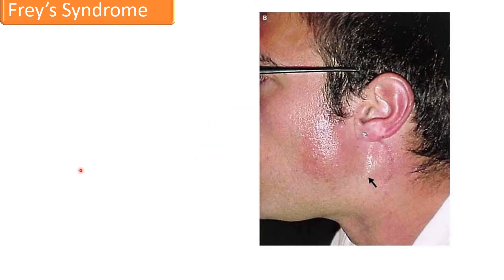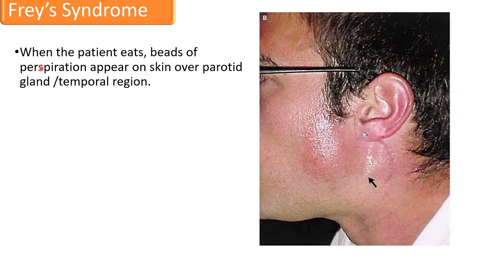Now let us consider the anatomical basis of Frey's syndrome. In this picture, we can see the skin over the parotid gland appearing reddish with beads of sweat. Frey's syndrome is the condition where, when a patient eats, beads of perspiration appear on the skin over the parotid gland or temporal region — that is, sweat is produced along with saliva during mastication.